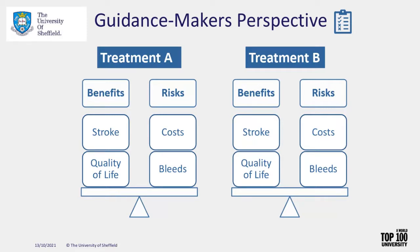Finally, the guidance makers' perspective - thinking about NICE - where they're comparing two or more treatments to evaluate which would be best in practice and rolled out within the NHS. After treatments have gained regulatory approval, the question becomes which should be used in regular practice. Additional considerations here include quality of life and costs, which are really important for the NHS. These items are often included in the health economic analysis of a trial, and some benefit-risk methods might be able to pull together both the effectiveness analysis and the cost-effectiveness analysis.